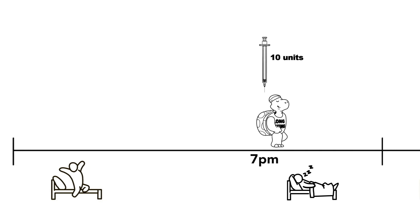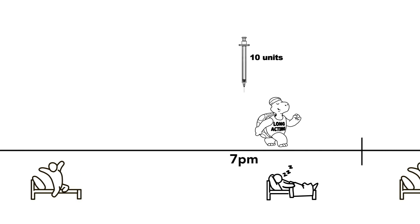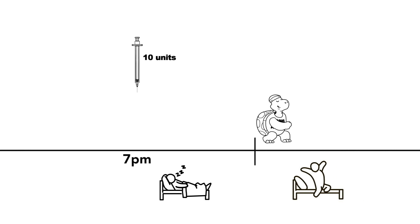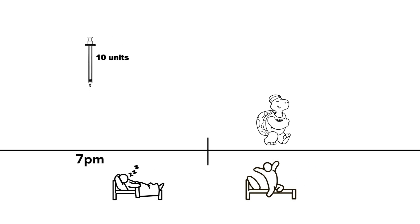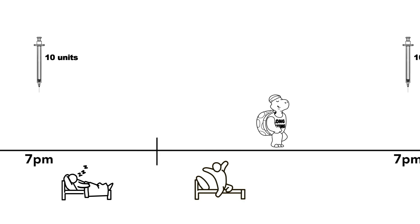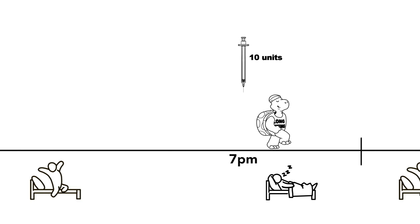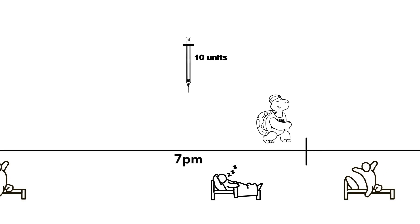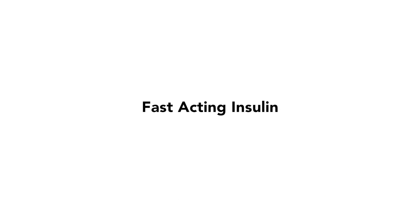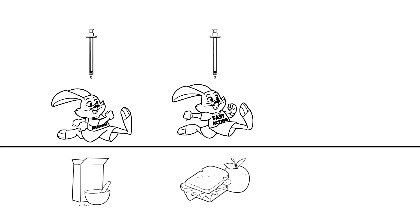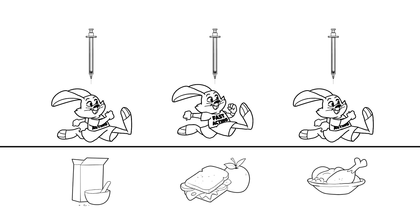You will give your child the same amount of long-acting insulin every day at the same time. For example, you might give 10 units every day at 7 p.m. But fast-acting insulin is different — the amount of fast-acting insulin may be different each time it is given.